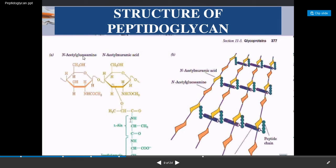Looking at the diagram again, we can see N-acetylglucosamine and N-acetylmuramic acid present in alternating manner. These amino acids form what we call the tetrapeptide — a four amino acid chain attached to the N-acetylmuramic acid.